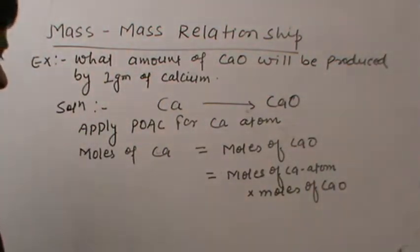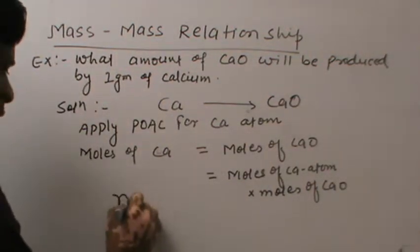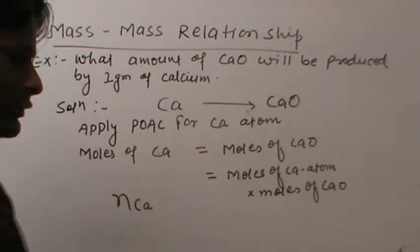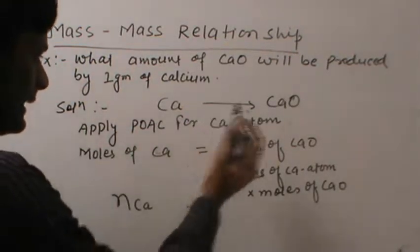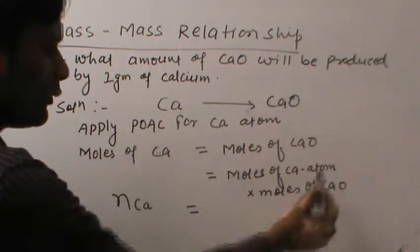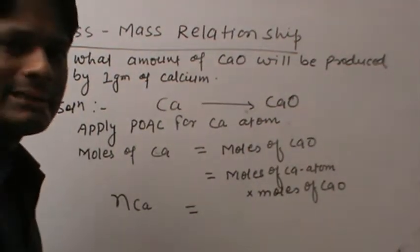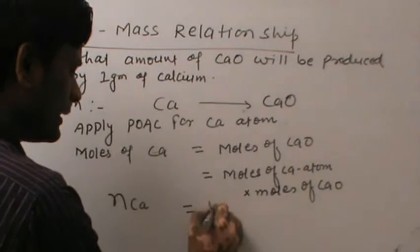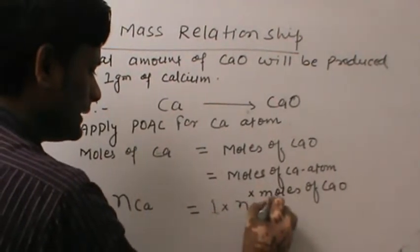We can write here, number of moles of Ca equals to... In the CaO, there is one mole of calcium atom. That means, this is one into number of moles of CaO.